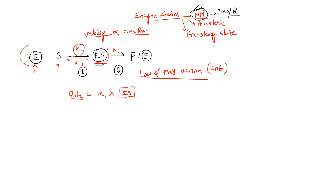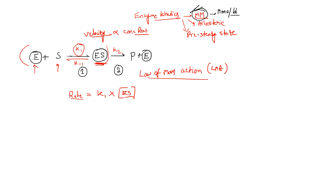Michaelis-Menten stated that the enzyme-substrate complex formed is under steady state. If there is no outside influence, the enzyme and substrate interact to form the enzyme-substrate complex, and we can calculate the rate of conversion of ES to product using the formula k1 into [ES]. In steady state there are a few assumptions we need to satisfy in order to apply this knowledge.